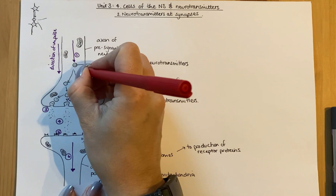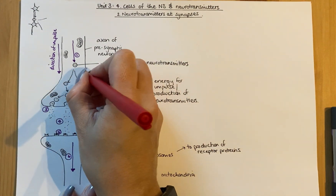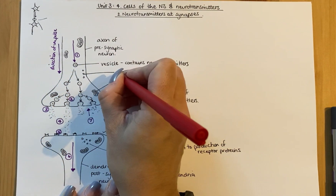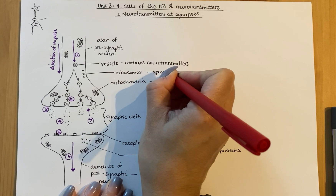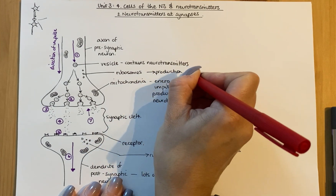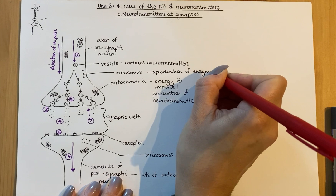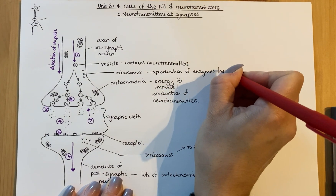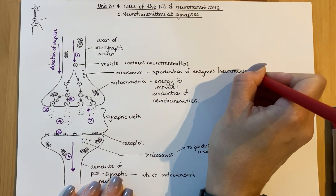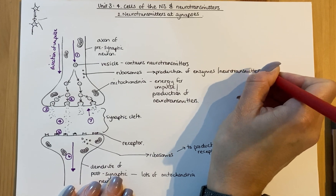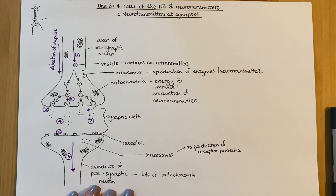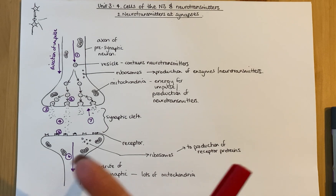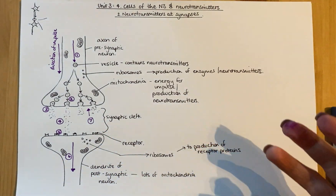Just to give you a more detailed example for the ribosomes: ribosomes are there for the production of enzymes or neurotransmitters. Think about the link between this and the nucleus as well. Enzymes, receptors, and neurotransmitters are all made of proteins. That nucleus would contain DNA, which contains genes that control the production of those enzymes or proteins.